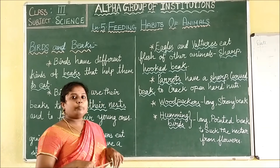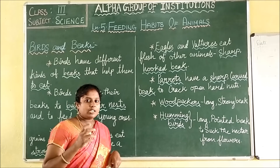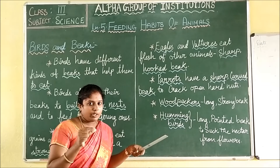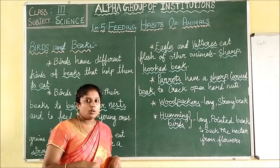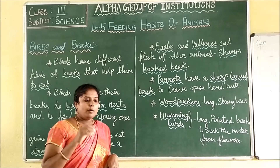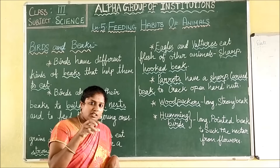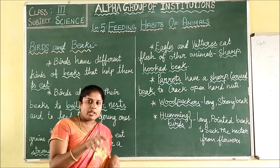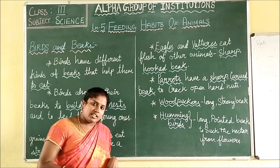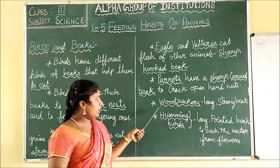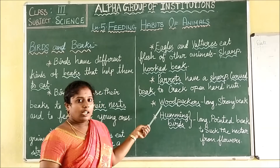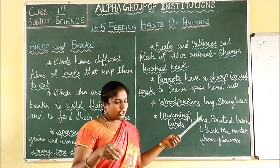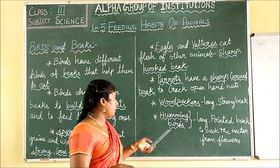Then, woodpeckers. What will woodpeckers do? Their beak will be long and strong. By using the beak, it will put holes in the trees and use the trees as their nest. Their beak is long and sharp.